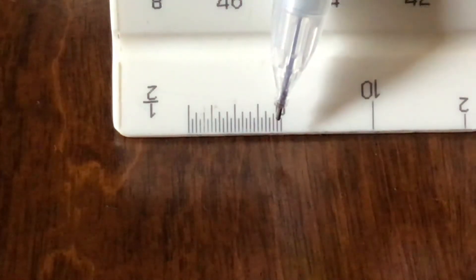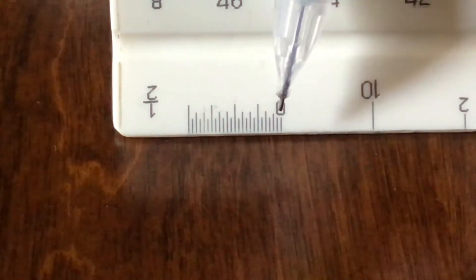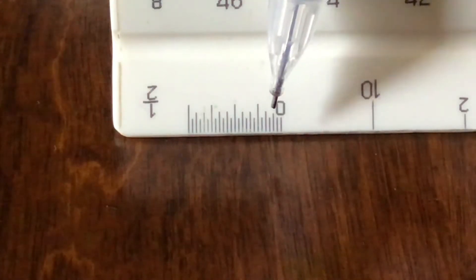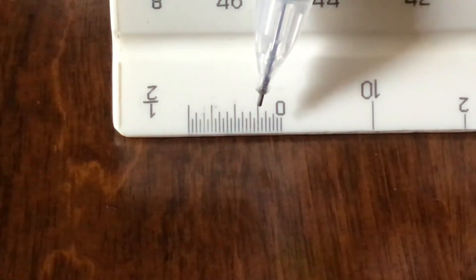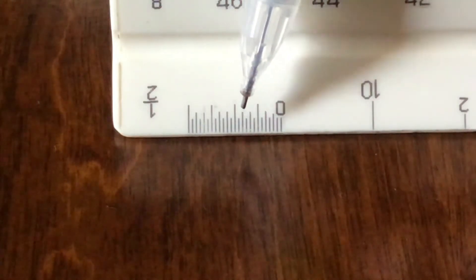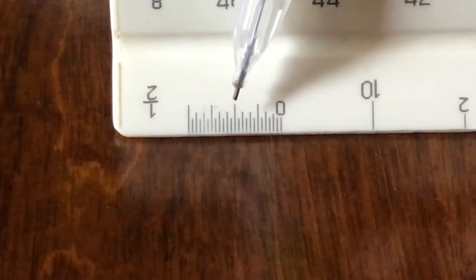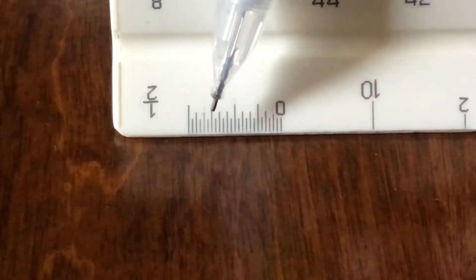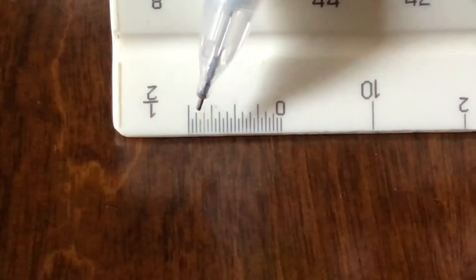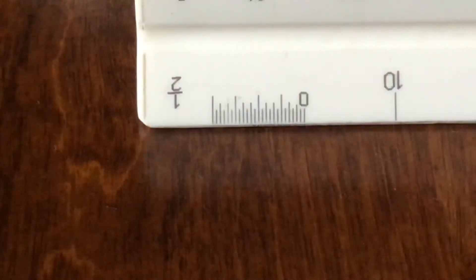The little teeny lines represent half inches so we've got half, 1 inch, 1.5, 2, 2.5, 3, 3.5, 4, 4.5, 5, 5.5, 6, 6.5, 7, 7.5, 8, 8.5, 9, 9.5, 10 and so on until you get to 12.